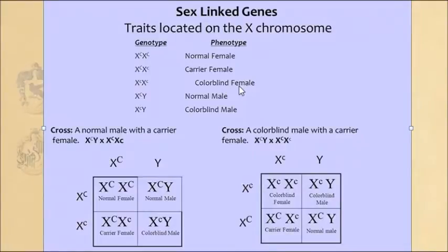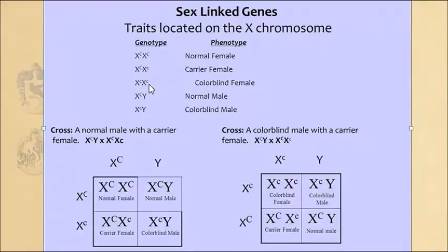Next, let's look at a colorblind female. Colorblind females are only about one out of every 100 in the United States. She has two X chromosomes and each will have a lowercase recessive c attached to it — homozygous recessive. There is no dominant allele here to express itself, only recessive, so this female will be colorblind.